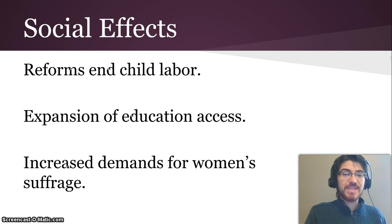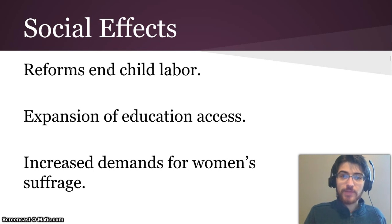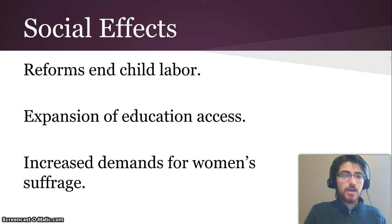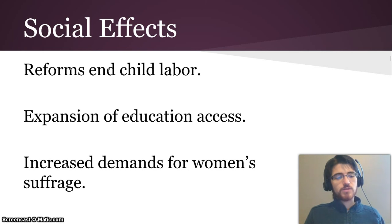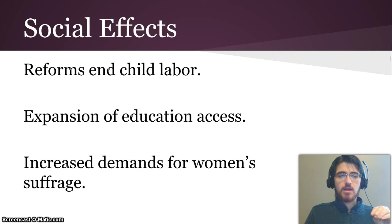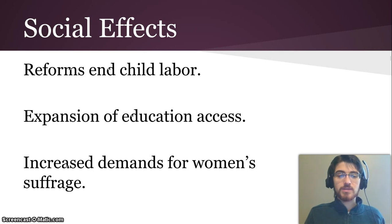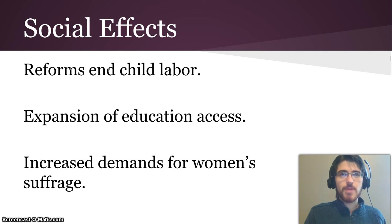There were reforms that ended child labor, and the push to end child labor was led by women, who entered the political process for the first time — it changed the role of women in society. The end of child labor led to an expansion of education access for both genders, and the forces of women being in the political system, plus expanded education access, led to increased demands for women's suffrage — suffrage being the right to vote. In the end, the Industrial Revolution made for more gender equality, which is interesting. And that's the end of this video.